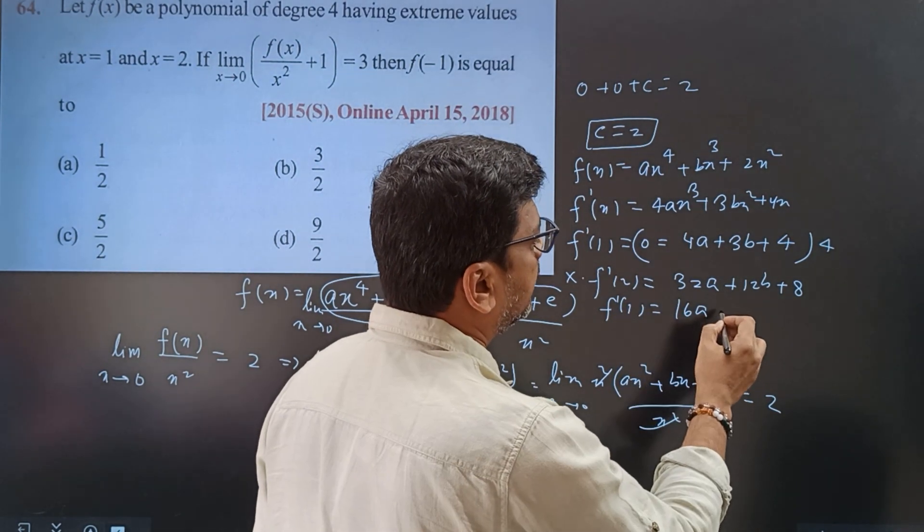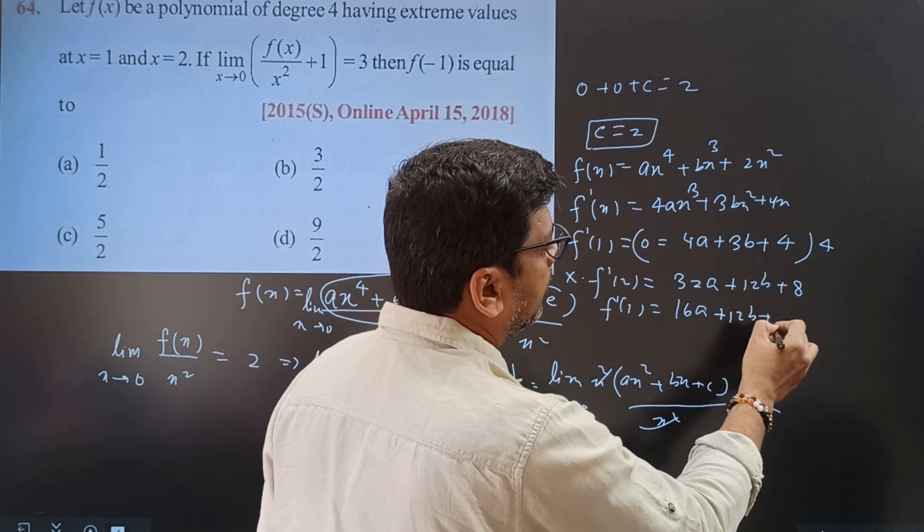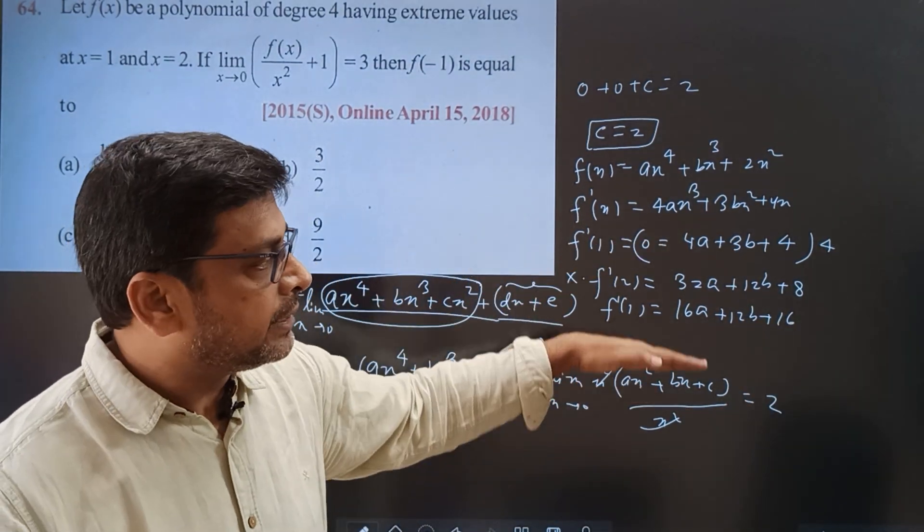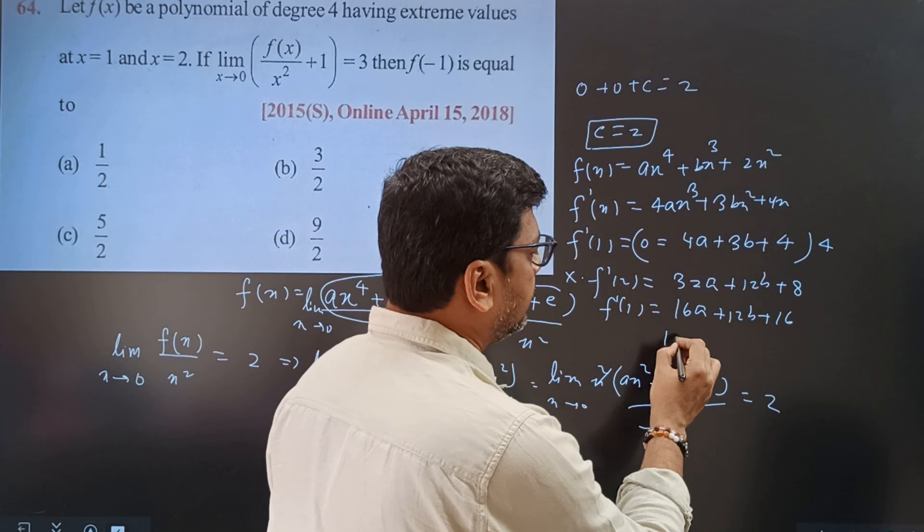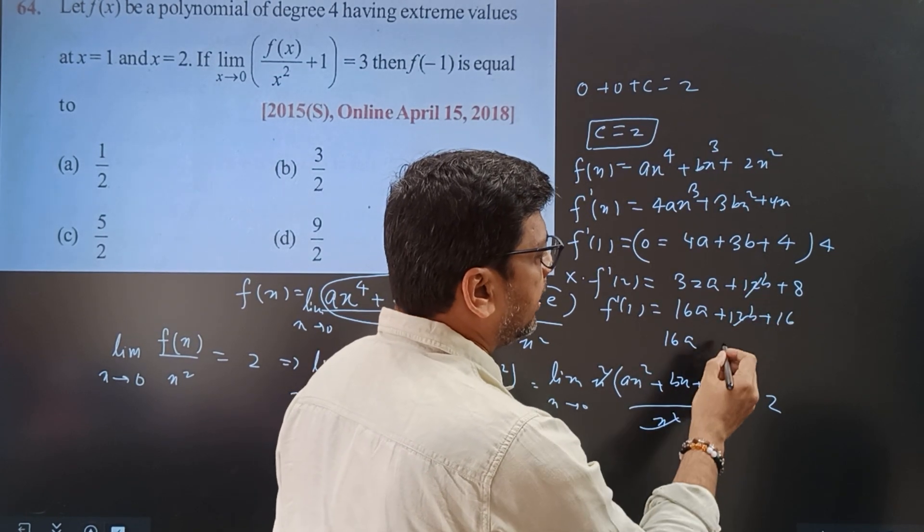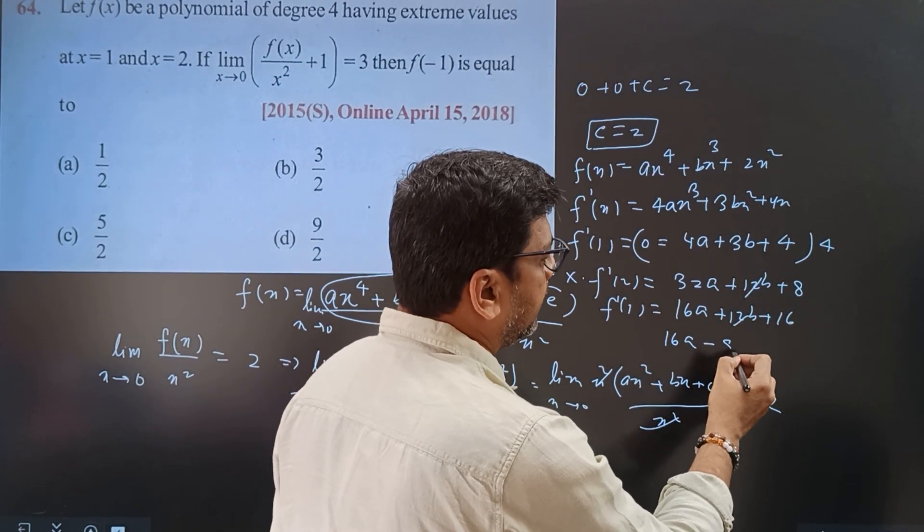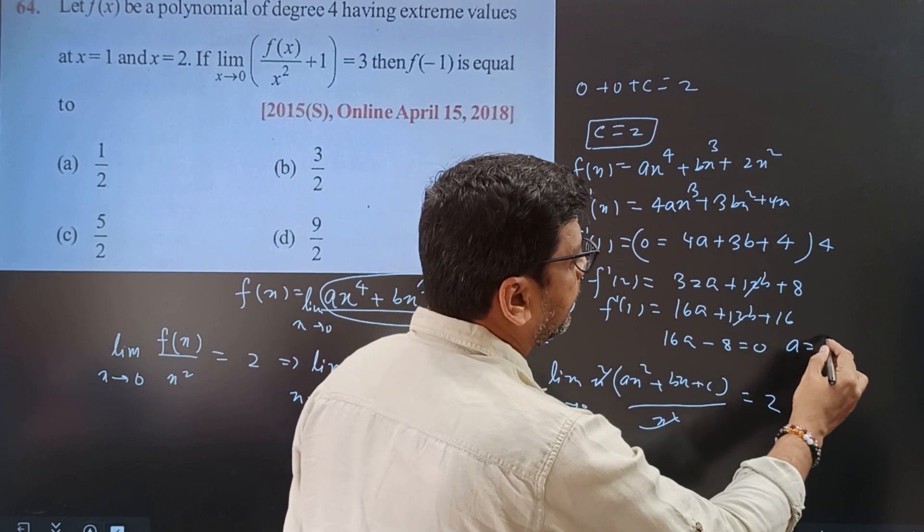If you multiply this by 4, it becomes 16a. 12b plus 16. If you subtract this minus this, 16a will cancel and minus 16a is equal to 0. a value is 1/2.